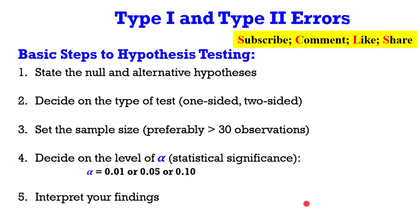Before you start testing your hypothesis, these are the basic things that must be done — even though most times we don't do it. But it is always good to note somewhere on a piece of paper the type of test and the rules guiding your test before you begin. Number 1: you have to state both the null and alternative hypothesis.